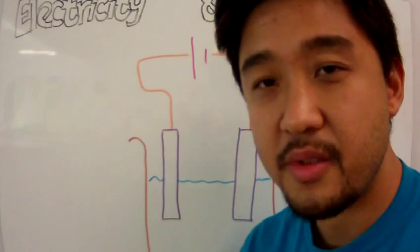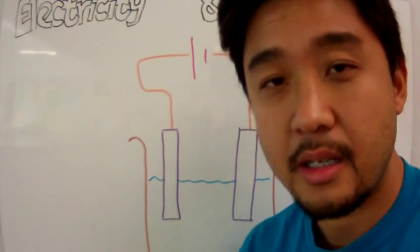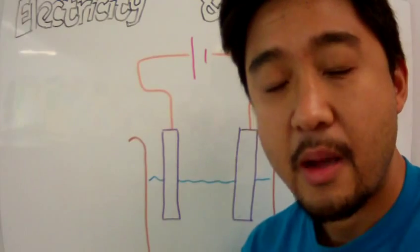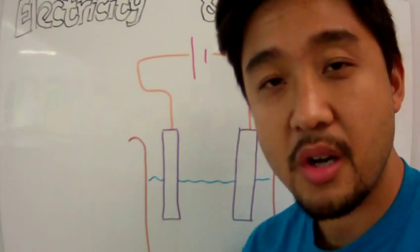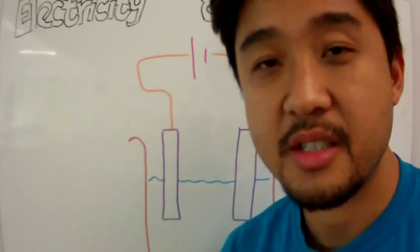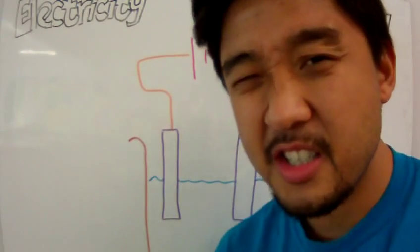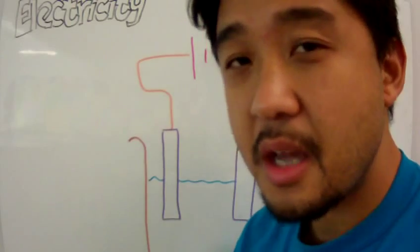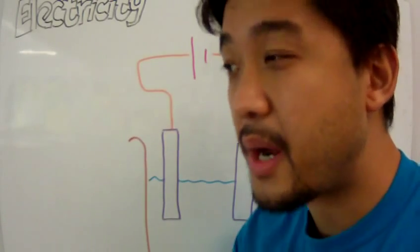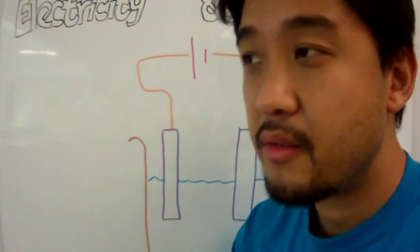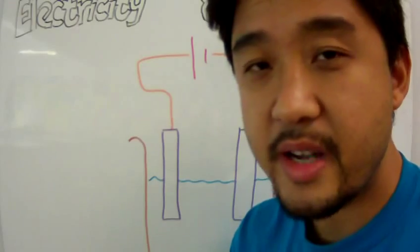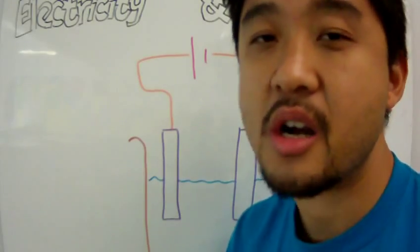I'm now going to continue the video lesson on electricity and chemistry, and we're going to focus on electrolysis. Electrolysis is using electricity to break up reactions and to cause chemical reactions to occur.